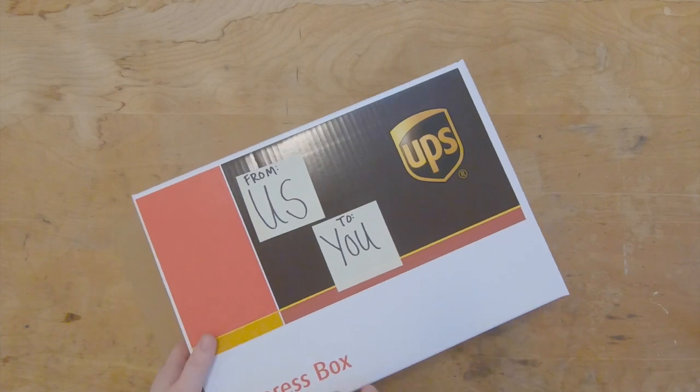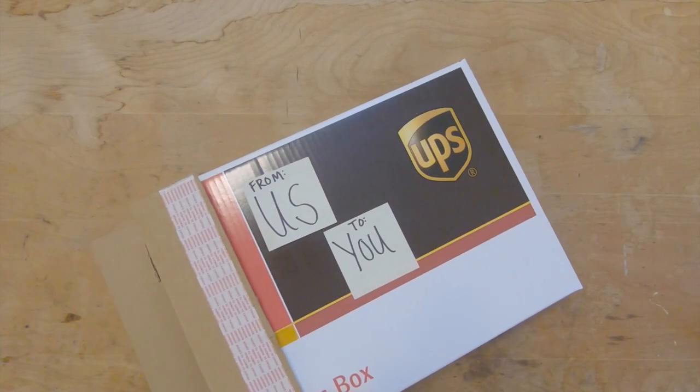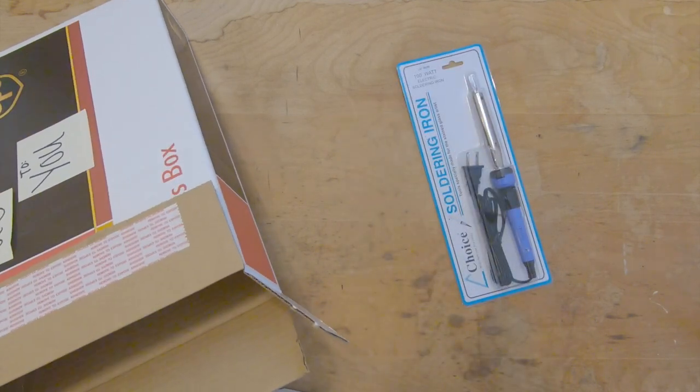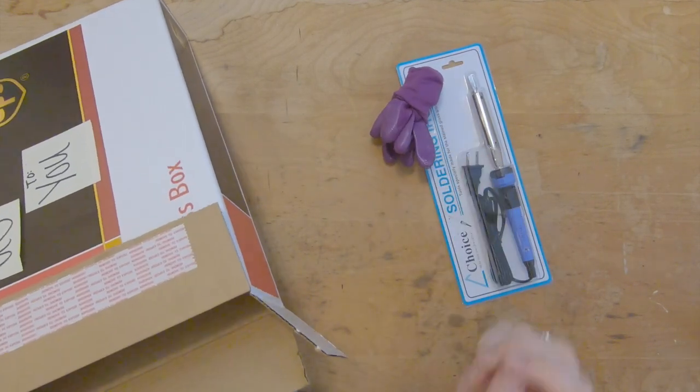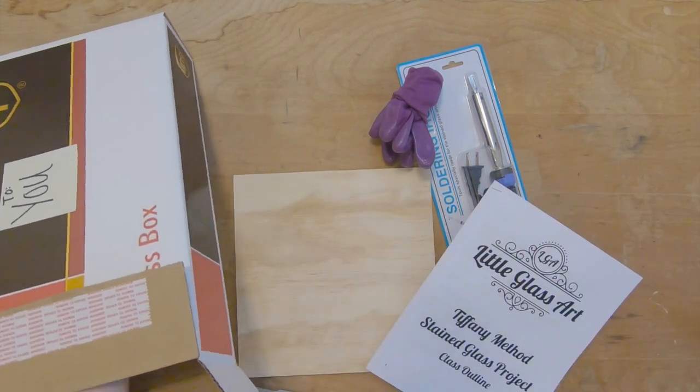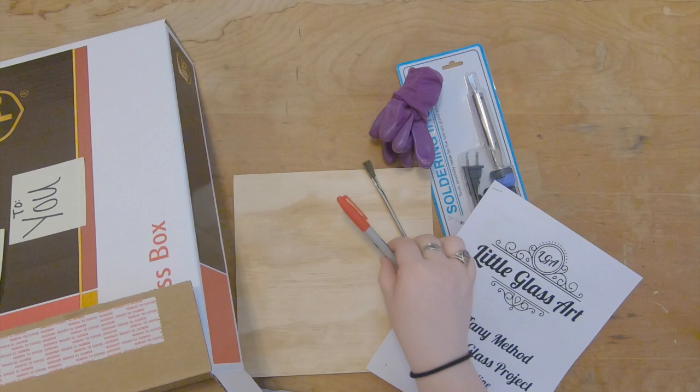Hey guys, I'm gonna unbox our copper foil Tiffany method kit. First we have our soldering iron, a design kit, nitrile coated gloves, work board, written instructions on how to do the project, a flux brush.